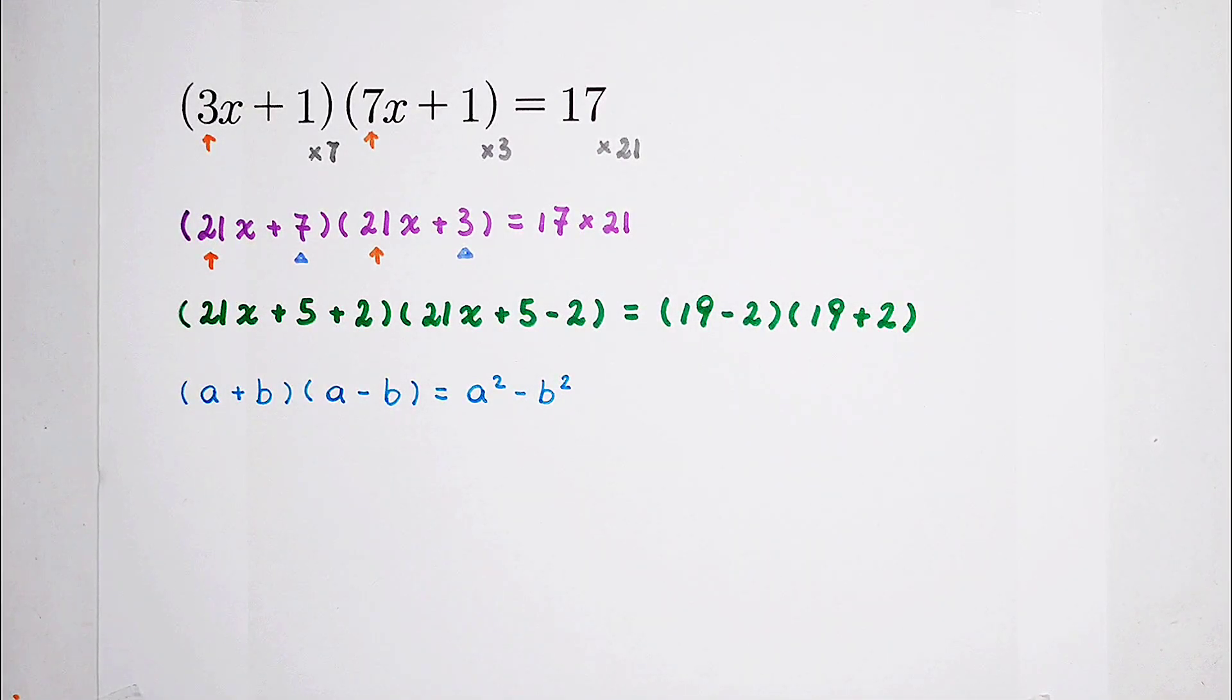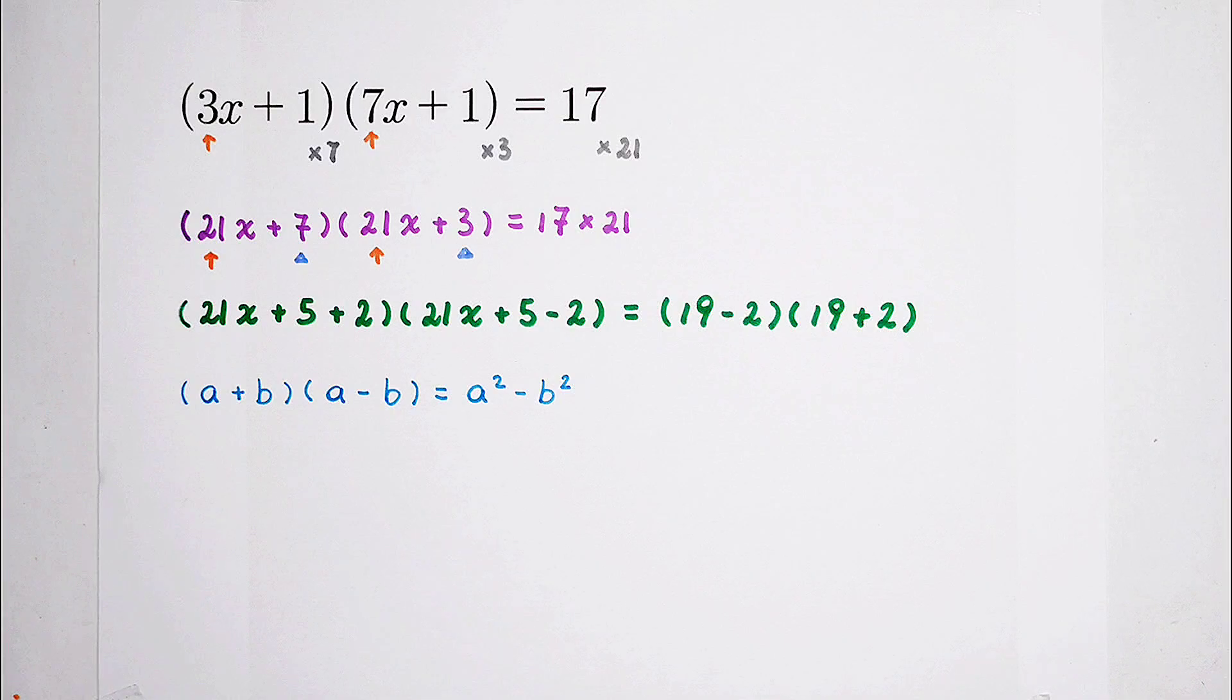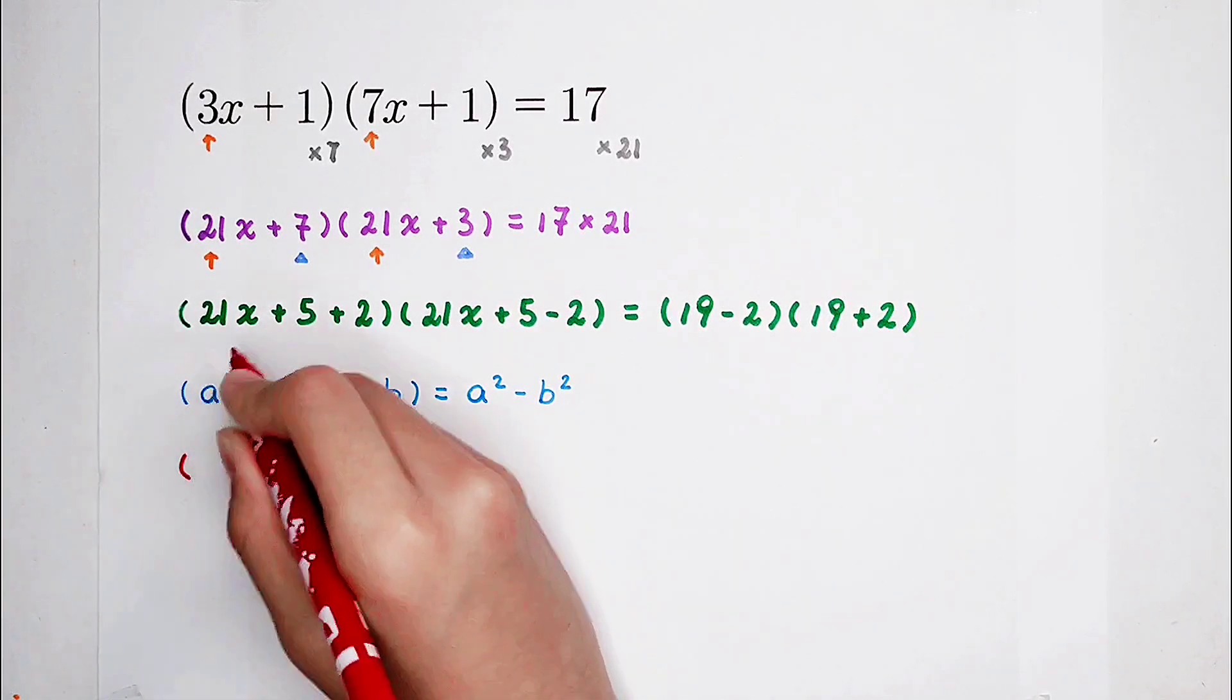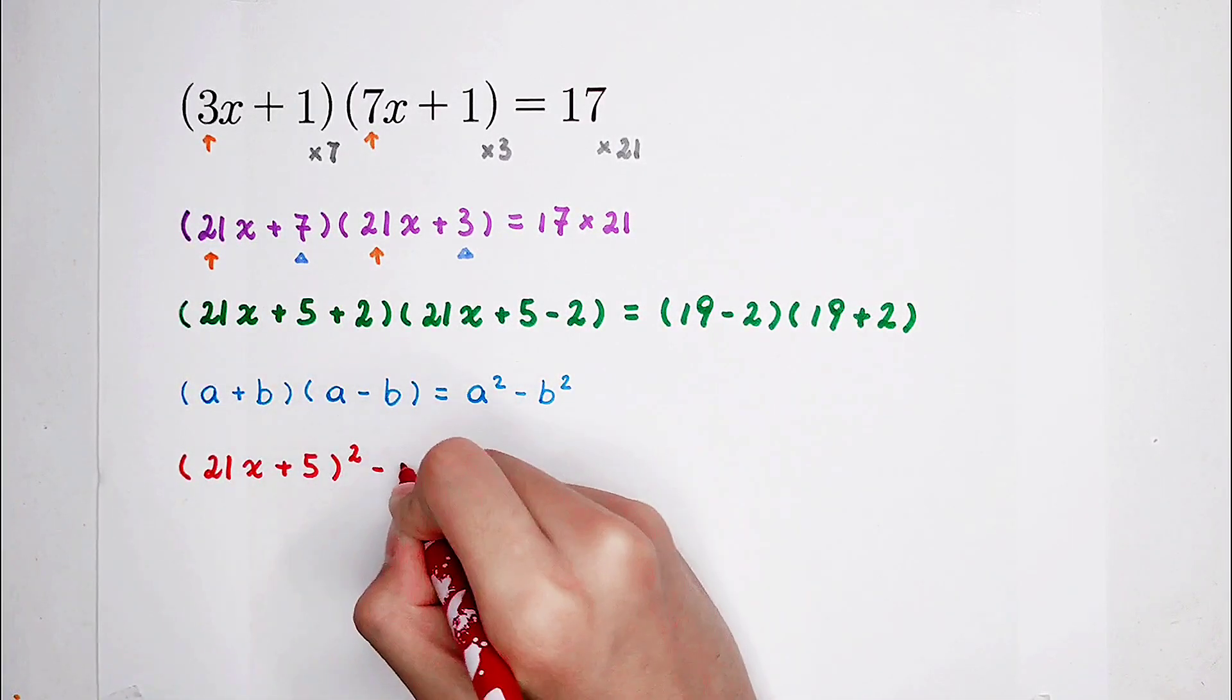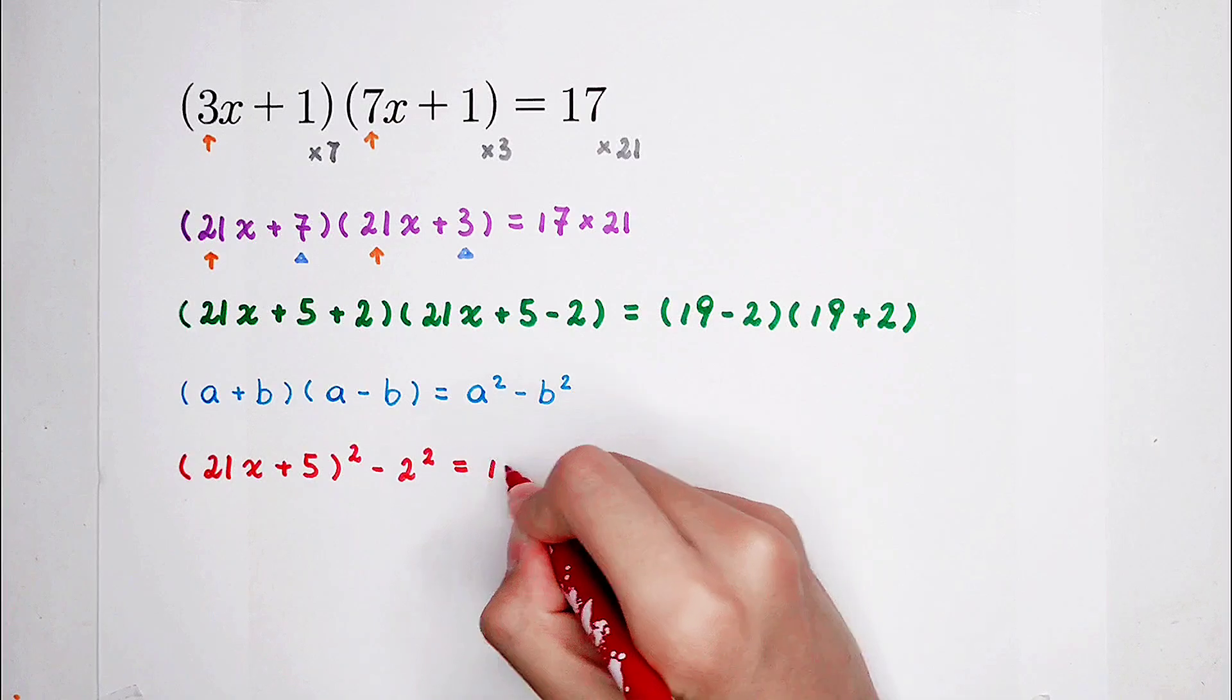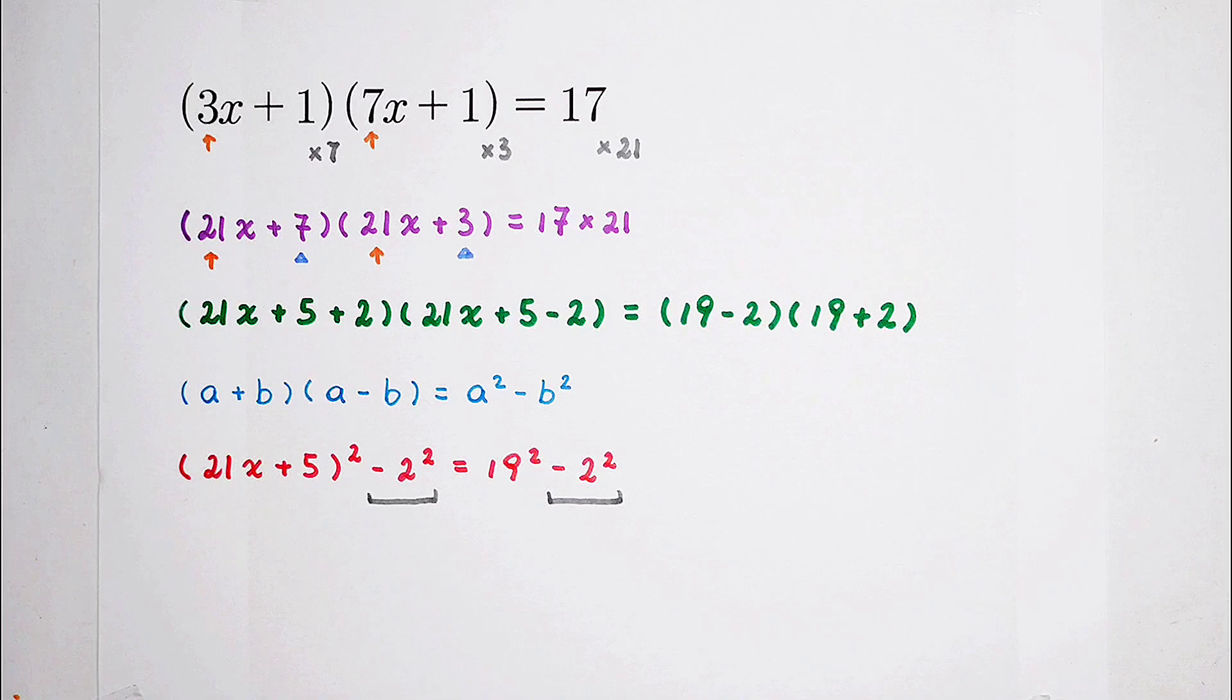Use it. And then you can find out that 21x plus 5 is the A, 2 is the B for the left-hand side. And for the right-hand side, A is 19, B is also 2. So the left-hand side will become 21x plus 5 all squared minus 2 squared. Our right-hand side is going to be 19 squared minus 2 squared. Minus 2 squared, minus 2 squared. So cancel.